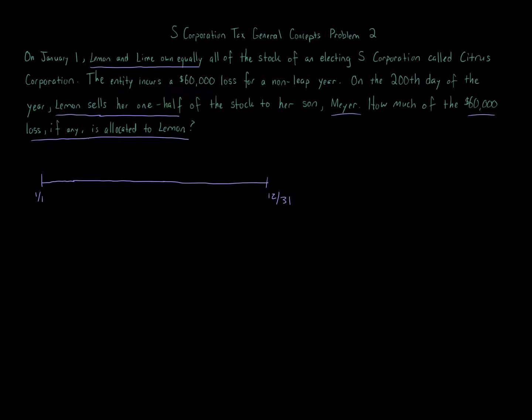On January 1st we have two owners, Lemon and Lime, and they own the stock equally. On the 200th day of the year, so that is more than halfway through, 200th day of the year, basically we now have Meyer and Lime. Lemon has now sold the interest to Meyer. Lemon no longer owns an interest. Meyer owns one-half, Lime owns one-half.